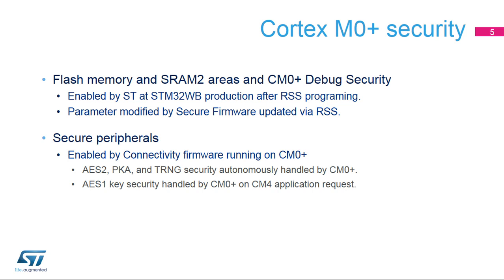At STM32WB production, the Cortex-M0 Plus Security is enabled after the root security service, or RSS, firmware has been programmed into the user flash memory. Any subsequent Cortex-M0 Plus firmware update, connectivity stack, or RSS is handled by the RSS and modifies the Cortex-M0 Plus security parameters as needed. The AES2, PKA, and RNG security is fully handled by the Cortex-M0 Plus whenever needed by the Cortex-M0 Plus firmware.